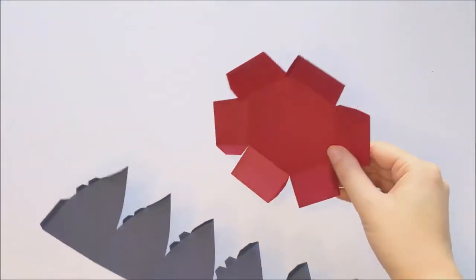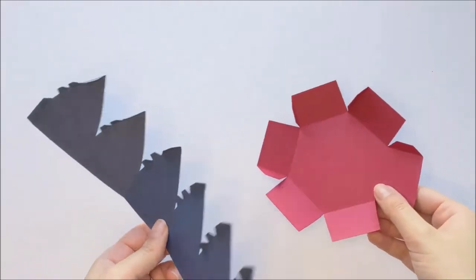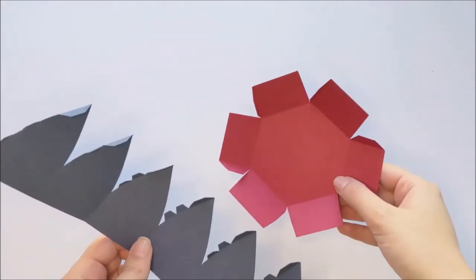Start by cutting out your pieces on your cutting machine and then fold the container piece and the top piece along the score lines like I've done here.